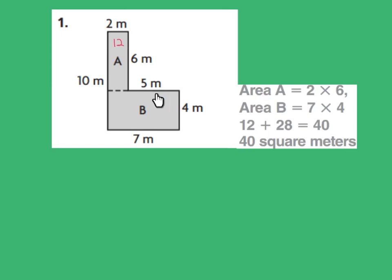Now let's take a look at rectangle B. We can see that the base is 7 meters and the height is 4 meters. Therefore, 7 times 4 would be 28 squared meters. Now all we have to do is add the combined squared meters. We'll have 12 plus 28, which would equal 40 squared meters.